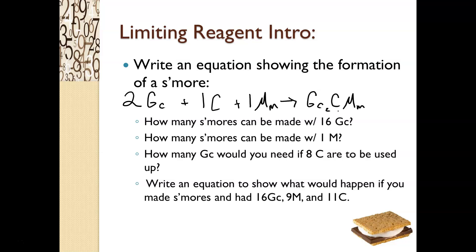We could even add a delta H above our yield sign, because of course we're going to add heat in order for this reaction to occur. So it's an endothermic process to make this reaction.